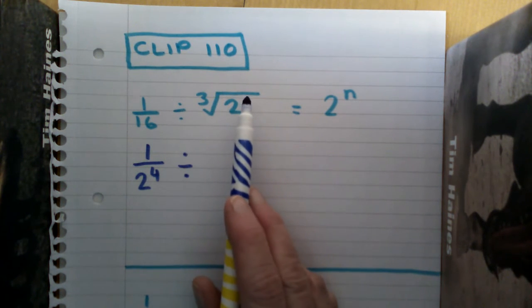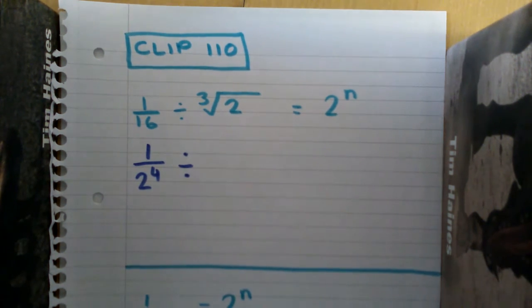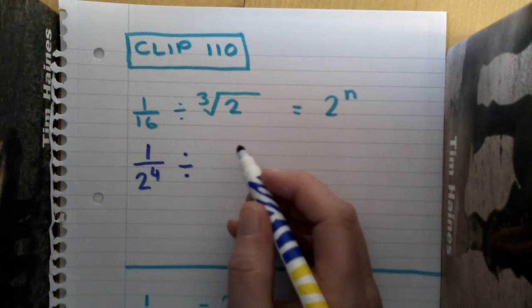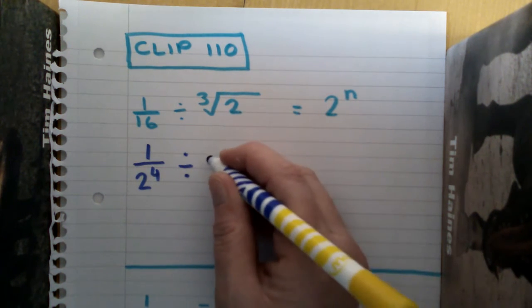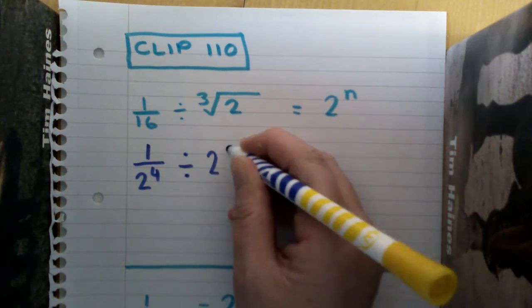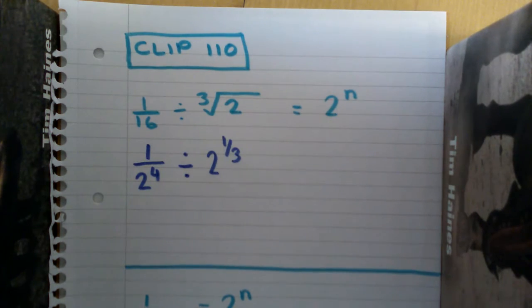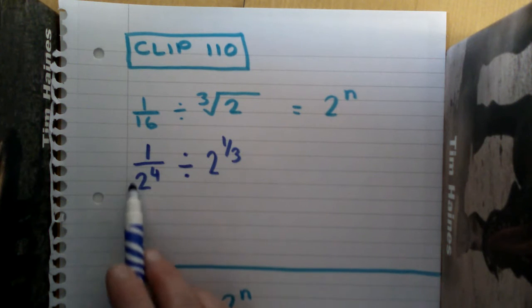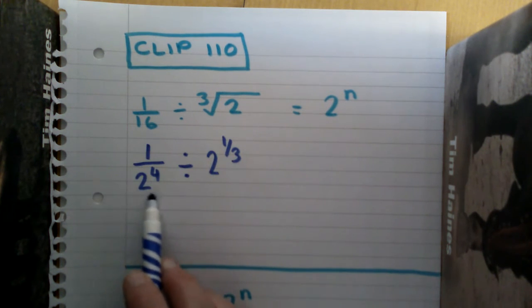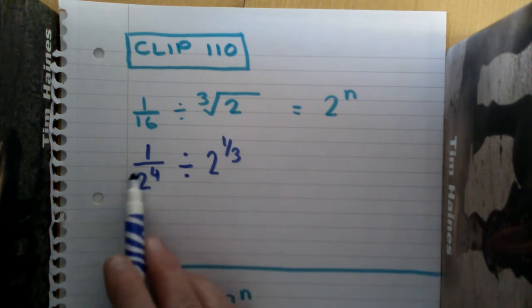If we look at this one, we know that the cube root of 2 is 1 third. When we talked about roots, we change them into fractions, so the cube root of 2 is 1 third. That becomes 2 to the power 1 third.